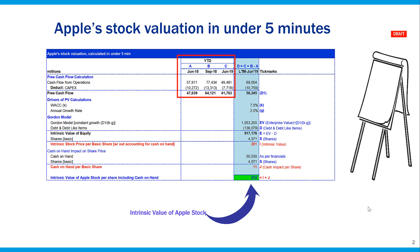Then we calculate free cash flow as June 19 year-to-date, plus annual September 18, less June 18 year-to-date. So now we have an annual free cash flow number that we can use as a proxy for future years. Basically, this is our baseline free cash flow going forward. The company is expected to have $58 billion generated in free cash flow every year in perpetuity, which means forever.